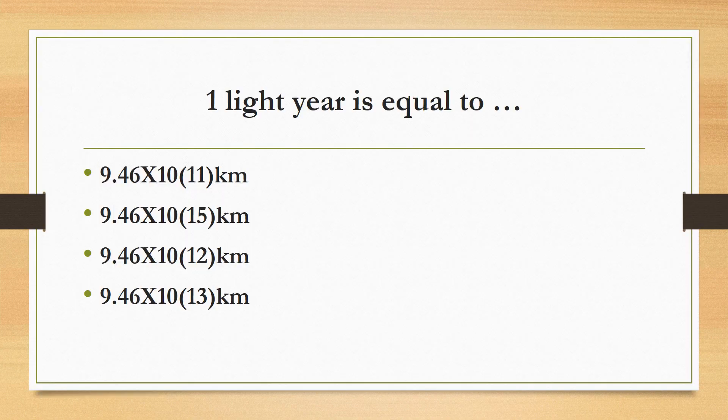1 light year is equal to: 9.46 × 10¹¹ km, 9.46 × 10¹⁵ km, 9.46 × 10¹² km, or 9.46 × 10¹³ km? The correct answer is 9.46 × 10¹² km. Also, 1 light year is equal to 9.46 × 10¹⁵ meters.